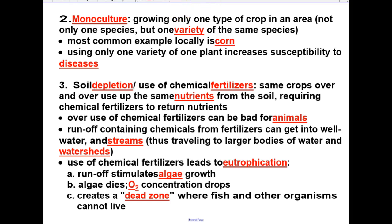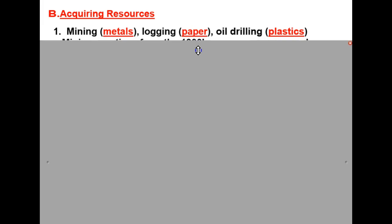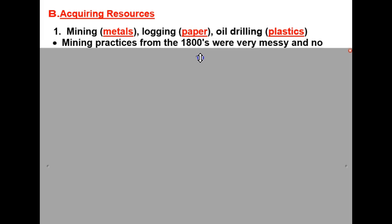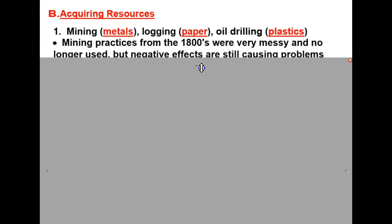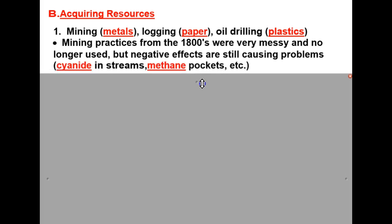Now we'll take a look at the negative impact of human activity on acquiring resources. Typically, to acquire a resource, we have to do things like mining for metals, logging of trees for paper, and drilling for oil to get plastics and fossil fuels. Mining practices from the 1800s were very messy and are no longer used, but negative effects are still causing problems — including cyanide in streams and methane pockets beneath the surface of the earth.